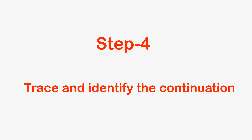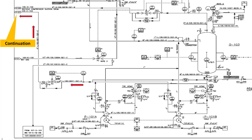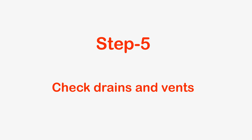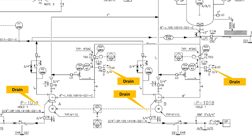Step 4: Trace and Identify Continuation. Trace the line all the way to the end to identify the continuation of the line. If it goes to another P&ID, take out that P&ID and trace the line to find where it goes and is connected. Step 5: Check the drains and vents of all the lines. Now that we have identified the supply and discharge lines, associated lines, and continuation, it's time to identify the vents and drains available in the lines.